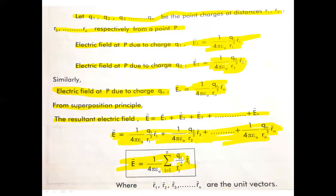So now we have discussed electric field and electric field strength. In a region we have considered, if the electric field is the same at all points, it is called uniform electric field. Non-uniform electric field: if in the region considered, the electric field is different at different points, then it is called non-uniform electric field.